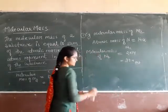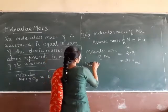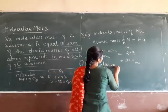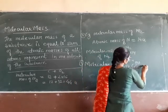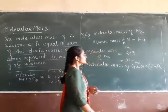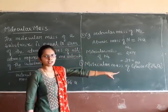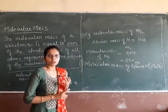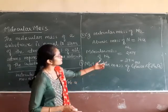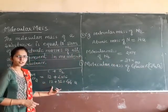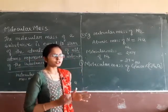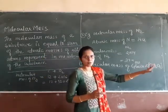Fourth example: molecular mass of glucose. The formula of glucose is C6H12O6 - you must know this formula. If the exam asks for molecular mass of glucose, you need to know the formula, because without the chemical formula you cannot find molecular mass. Both the molecular formula and the atomic masses must be memorized. Atomic mass of carbon is 12U, hydrogen is 1U, oxygen is 16U.